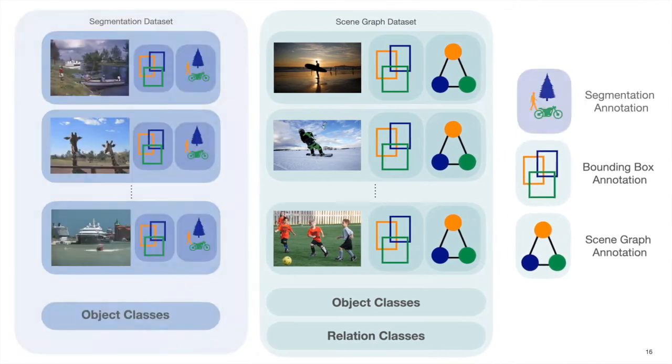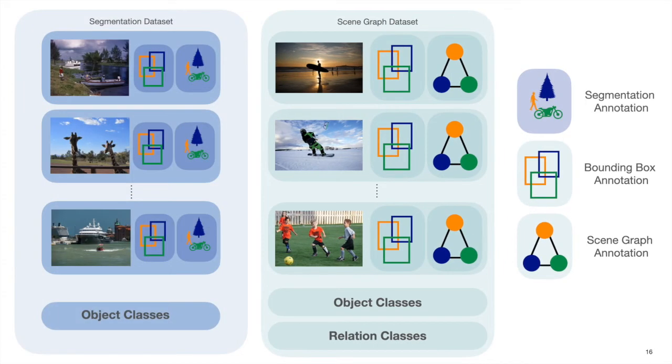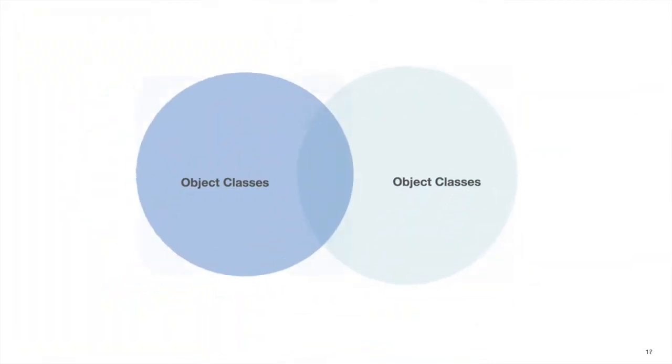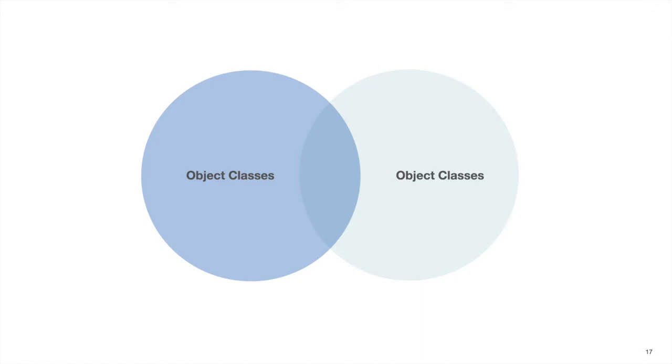Second, we assume the availability of an additional dataset where each image contains bounding box and segmentation annotations for the objects present within. Note that in general, the classes in the auxiliary dataset can have minimal overlap with those in the scene graph dataset, and both datasets do not need to share any images.